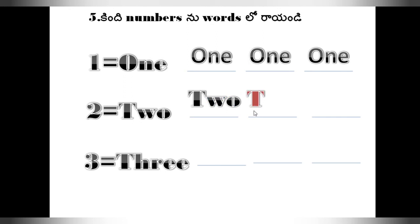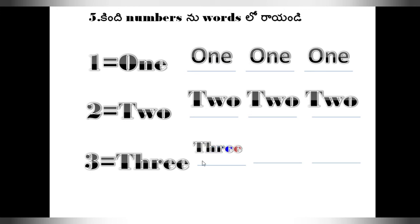Here T-W-O 2, here also T-W-O 2, here T-H-R-E-E 3, here also T-H-R-E-E 3. Like this, our children will write like this, then they will practice the next activity.